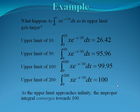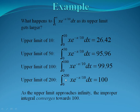Let's look at another example: the integral from 1 to infinity of xe to the negative x over 10 dx as the upper limit gets larger. With an upper limit of 10, the integral gives 26.42. At 50, it gives 95.96. At 100, it gives 99.95. At 200, it approaches 100. So as the upper limit approaches infinity, this improper integral converges towards 100.